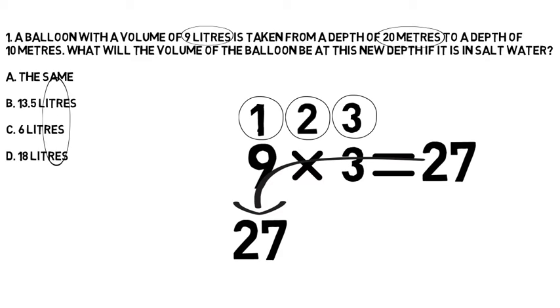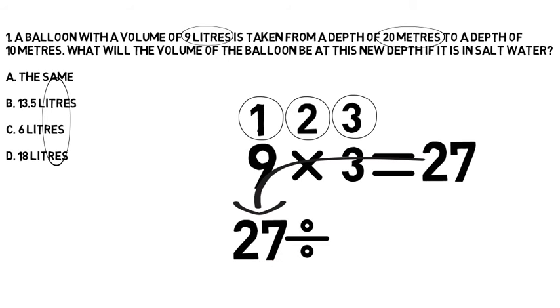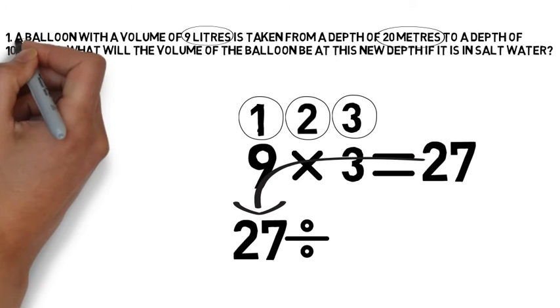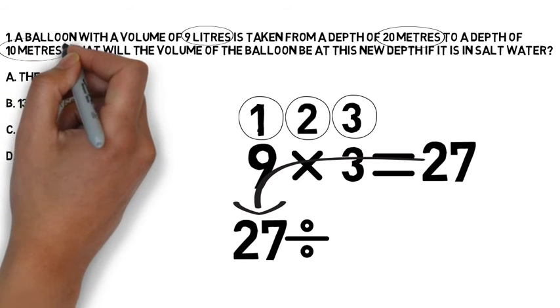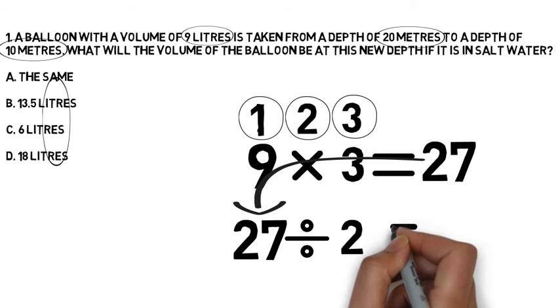What would happen to that balloon when we take it down to the second depth? It's going down. It's a balloon. It's going to get smaller. We divide. What do we divide by? What is the second depth? 10 meters. What's the pressure at 10 meters? Two atmospheres.